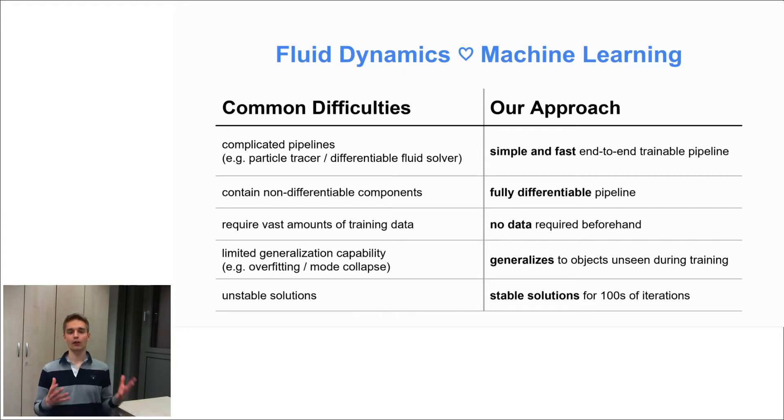In contrast, our approach really offers a simple and fast end-to-end trainable pipeline which is fully differentiable, doesn't require any data beforehand, and I'll show you how this is possible in a minute. It generalizes to objects which were never seen during training before and yields stable solutions for hundreds and even thousands of iterations.